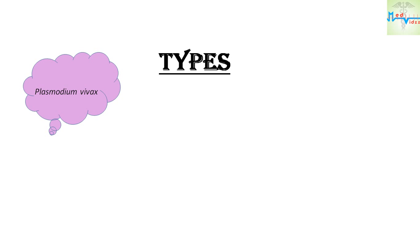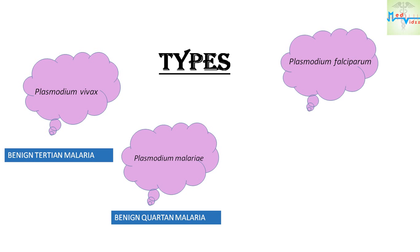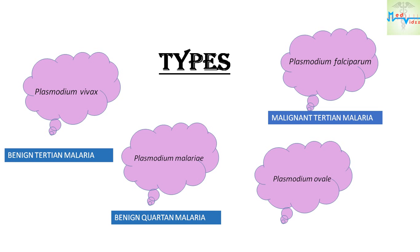Now let's see the types of malarial parasite. There are mainly four types: Plasmodium vivax causing benign tertian malaria, Plasmodium malariae causing benign quartan malaria, Plasmodium falciparum causing malignant tertian malaria, and Plasmodium ovale causing benign tertian malaria.